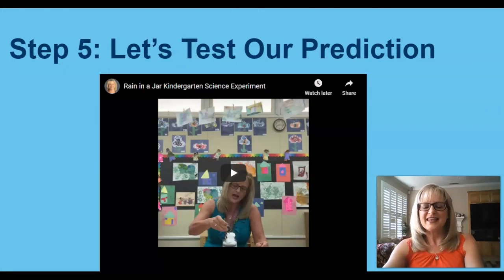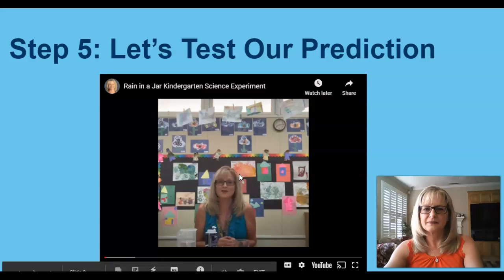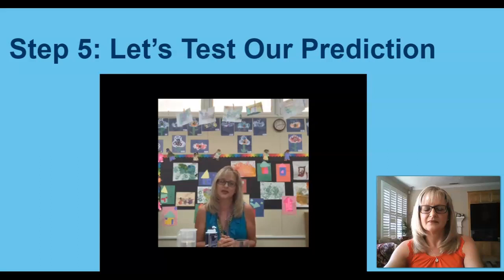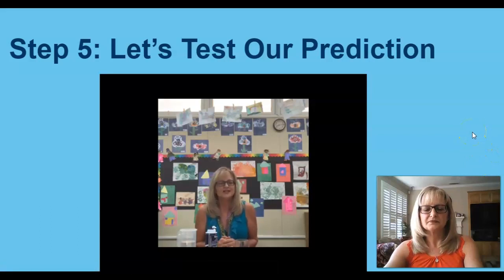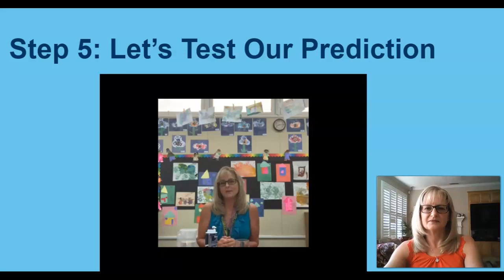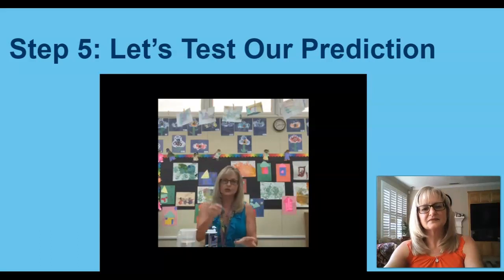We are ready for step five in the scientific method, and that is the experiment. We are going to determine if our hypothesis is correct. Let's watch the video, and you can follow along at home with supervision from an adult. Welcome, everyone, to my kindergarten classroom. I am Mrs. Bettencourt, and we are going to be doing a rain cloud in a jar experiment today. We've been making observations of the rain and talking about the scientific method. Our hypothesis is that there is water in the cloud, and it falls out as rain. What you'll need is a clear plastic container, food coloring, shaving cream, and water.